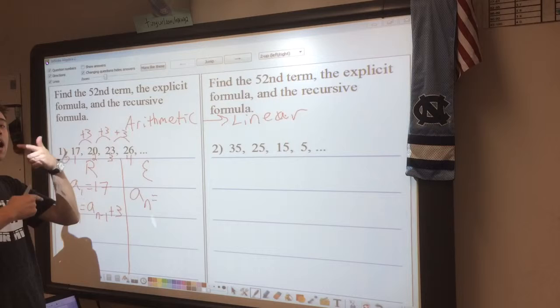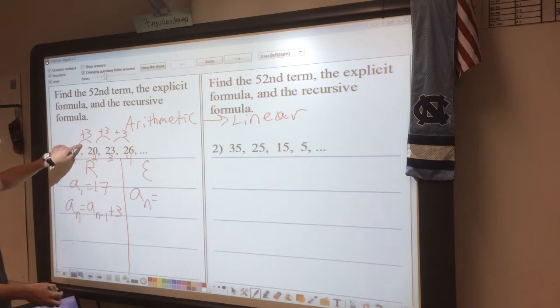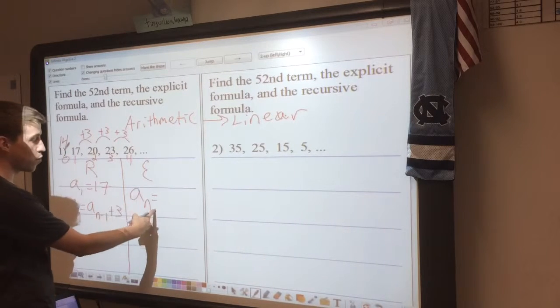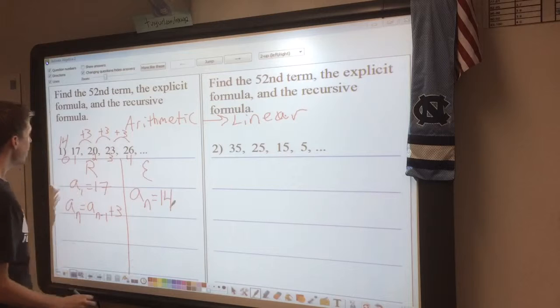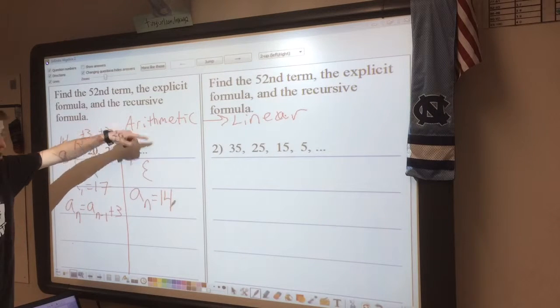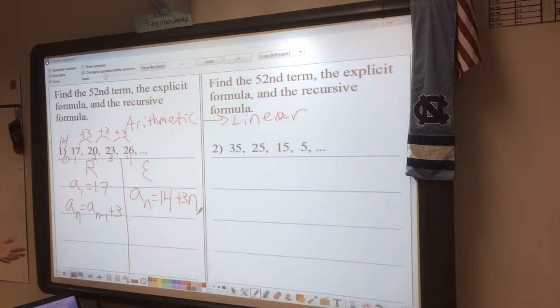So we have to go back one step to get the starting value for the explicit formula. So I'm going to go back 3 to 14, and my explicit formula will be 14. Now I'll look at the pattern, and we're adding 3 every single time, so it will be plus 3n. And now I'm done.